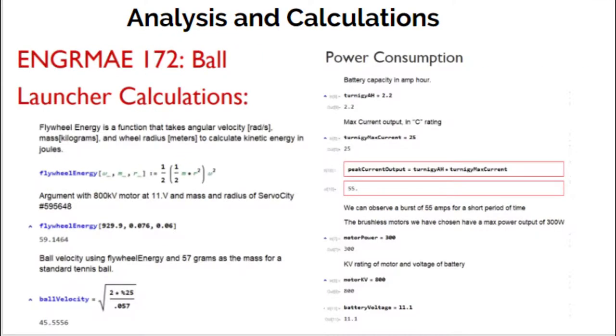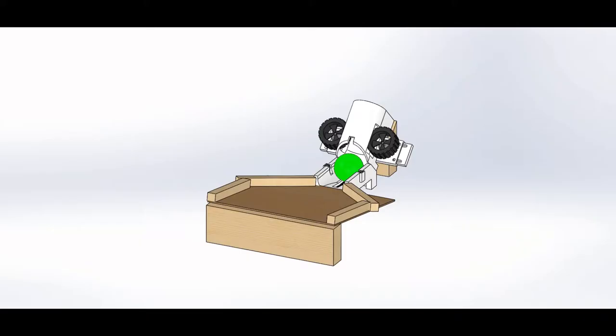The following are some of the calculations we made for our robot. With our 800kV motors powered by two 11.1V 2200mAh batteries, we could expect 8,800 RPM out of our motors. Also, with our 2200mAh batteries, we could expect 11 minutes at 30% motor speed and 3 minutes at 100% motor speed.